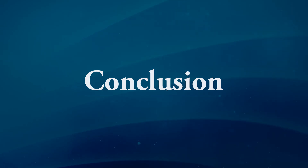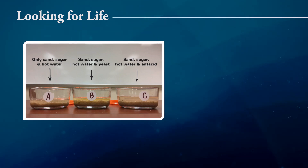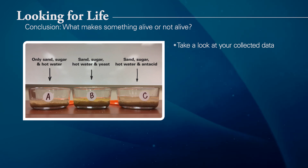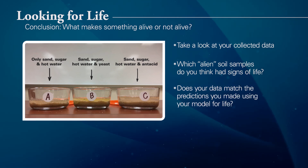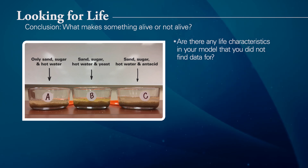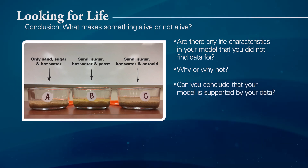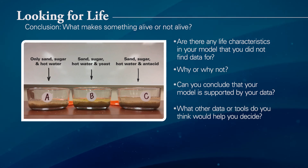Now that we've finished our experiment, let's try to understand what the data said about your model definition of life. Remember that these alien soil samples were meant to simulate samples NASA astronauts had brought back from Mars. You proposed a model through observation that attempted to answer the question: what makes something alive or not? As you look over your model and what happened in each of the three containers, which ones do you think had signs of life? Did these match your predictions? If yes, you can conclude that your model is supported. If no, the data is showing that your model most likely needs to be revised. But like all scientific investigations, one experiment rarely answers a question completely. Perhaps you need additional data or tools beyond what you were given in this activity. What other information would help you add to your knowledge of what it means to be alive or not?